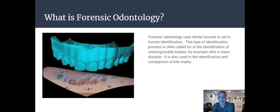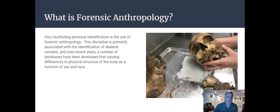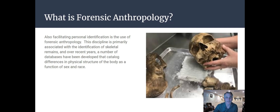Forensic odontology uses dental records, usually to help in human identification. If they find a body and aren't sure who it is, they can look at dental records to find the person's identity. It's also used occasionally with bite mark analysis. Forensic anthropology is another sub-discipline used in personal identification. People in this field can analyze skeletal remains to determine gender, race, or stature, and potentially link those remains to a particular missing person.